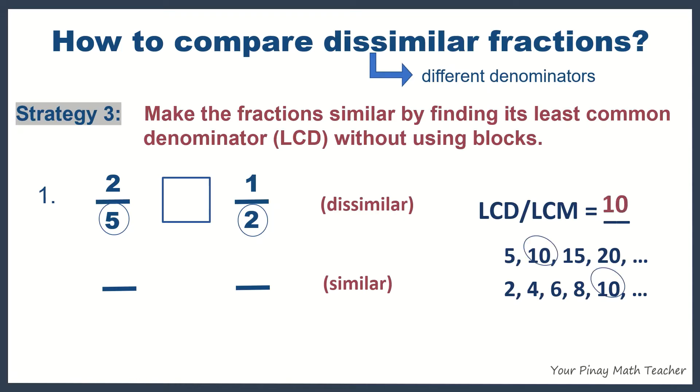10 is now our least common denominator, which must be written at the bottom of the fraction bar. Now, let's find the equivalent fraction of two-fifths with a denominator of 10. What will you multiply to 5 to get 10?